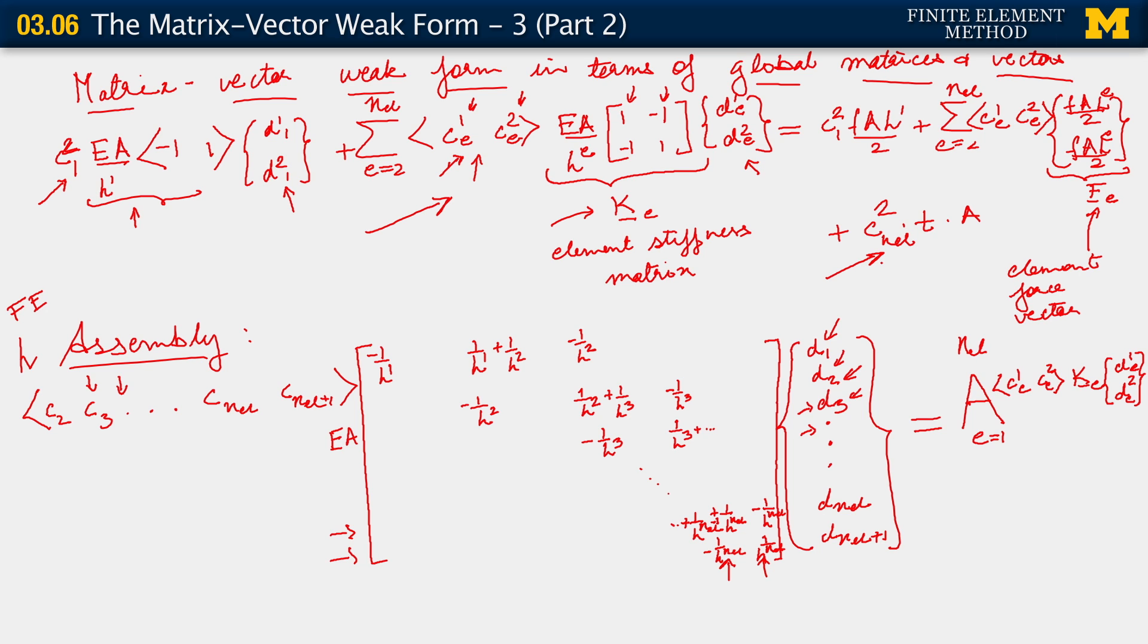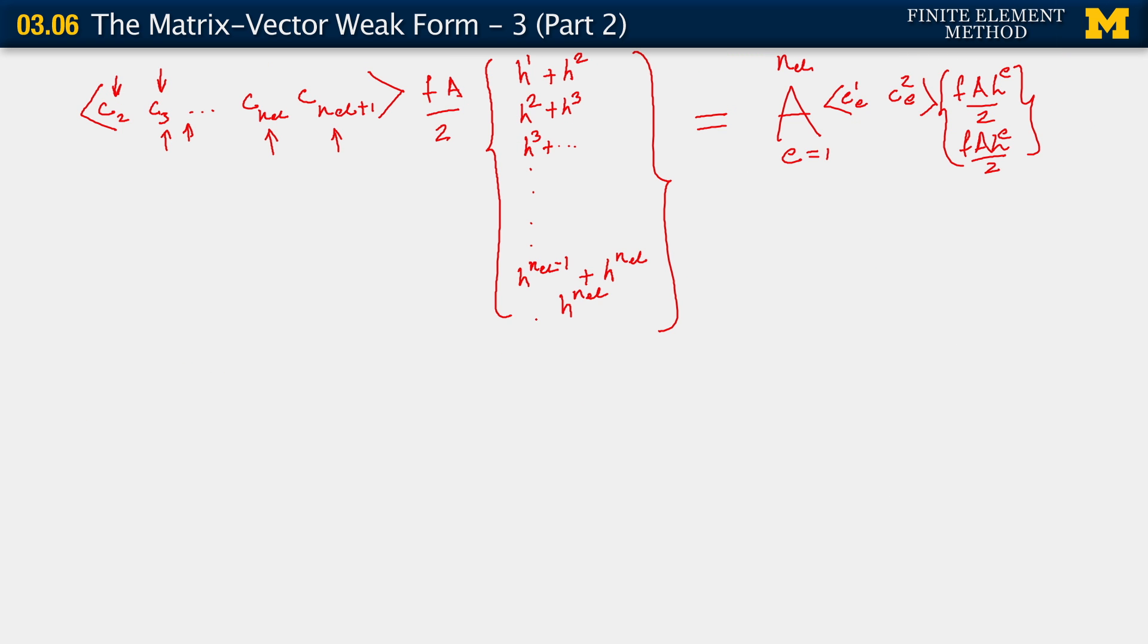And we know how that maps on to the global numbering system for weighting function degrees of freedom. This contribution then will appear in this position, the very last position here. It will be corresponding to C NEL plus 1, because C NEL plus 1 is the same as C2 for element NEL.